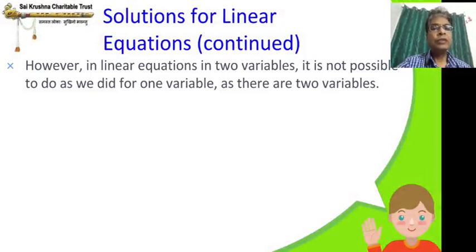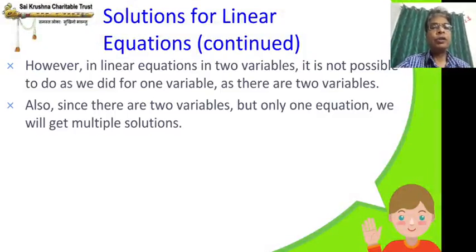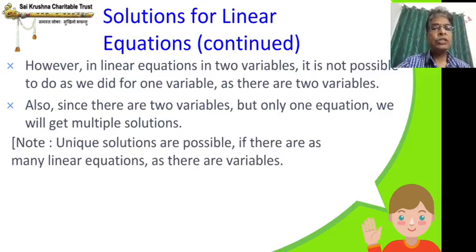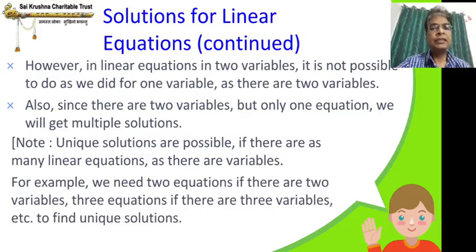In two variables, it is not possible to do as we did for one variable, since there are two variables. Also, since there are two variables but only one equation, we will get multiple solutions. Unique solutions are possible only if there are as many linear equations as there are variables — two equations for two variables, three equations for three variables, and so on.